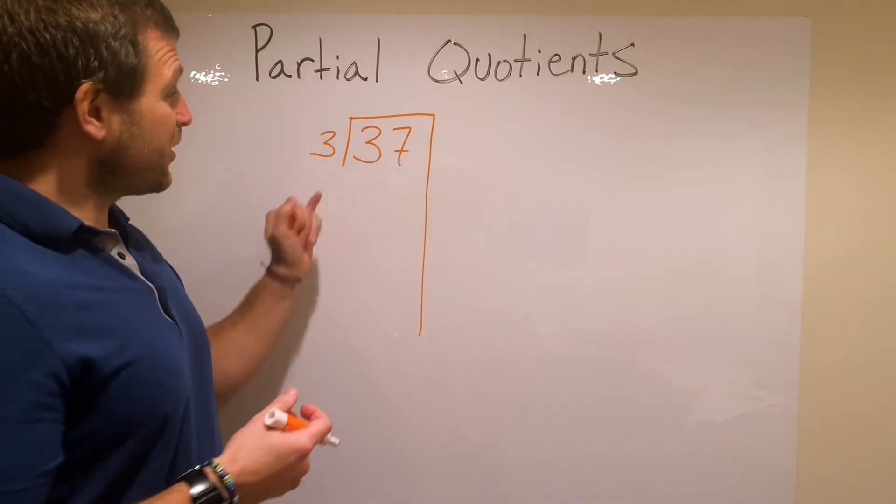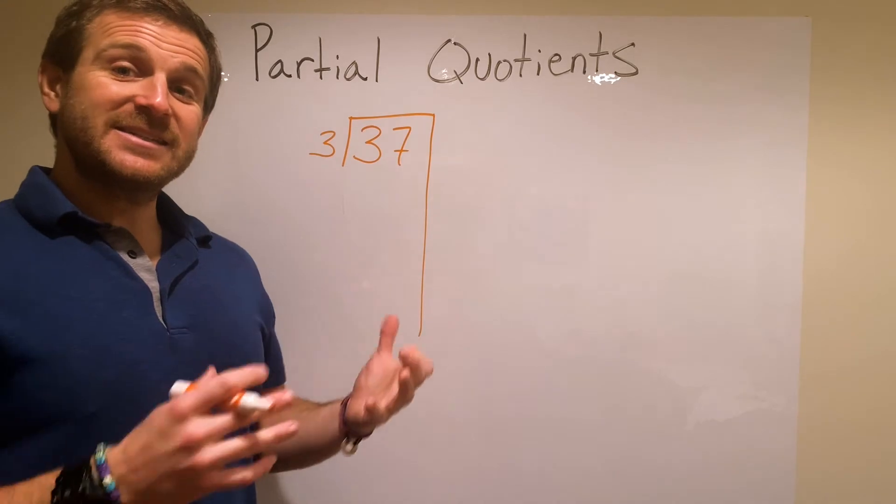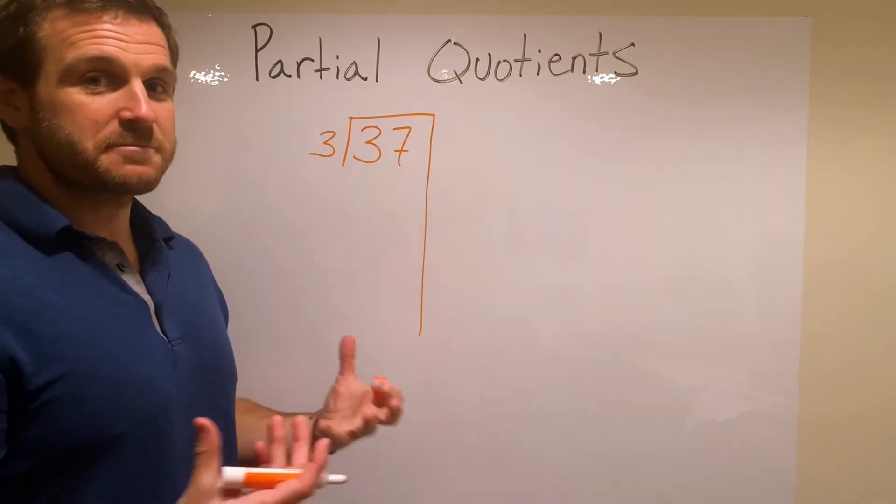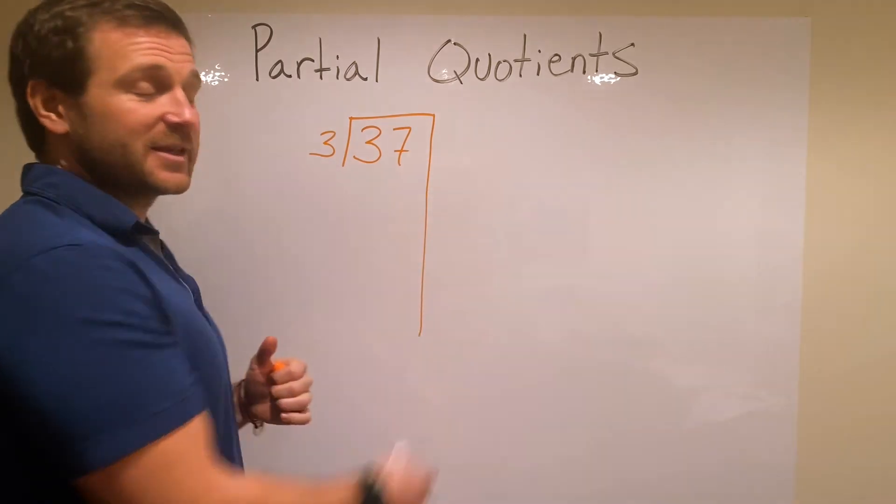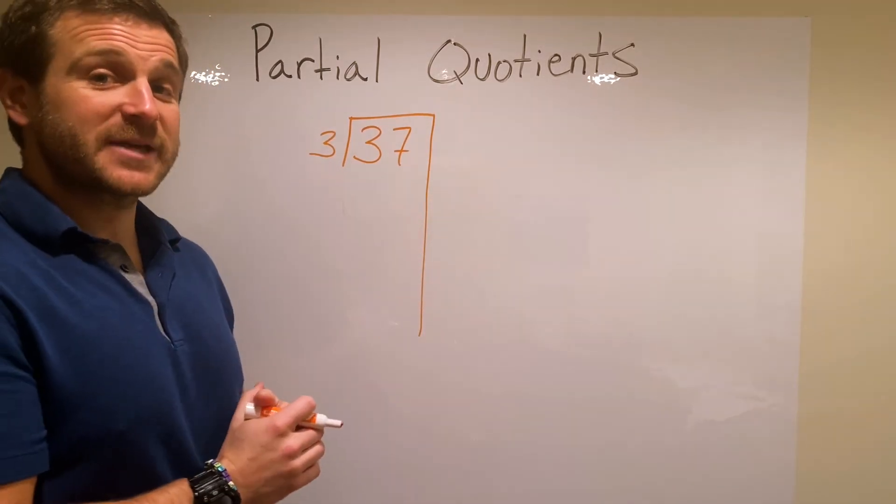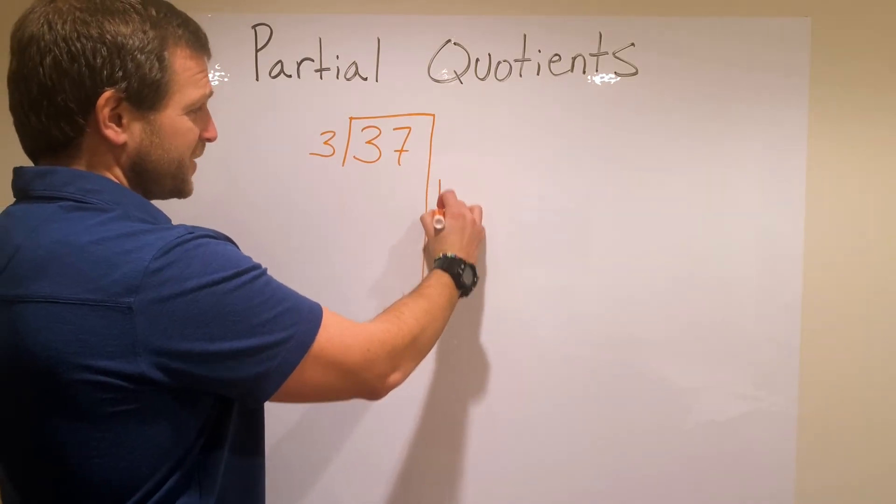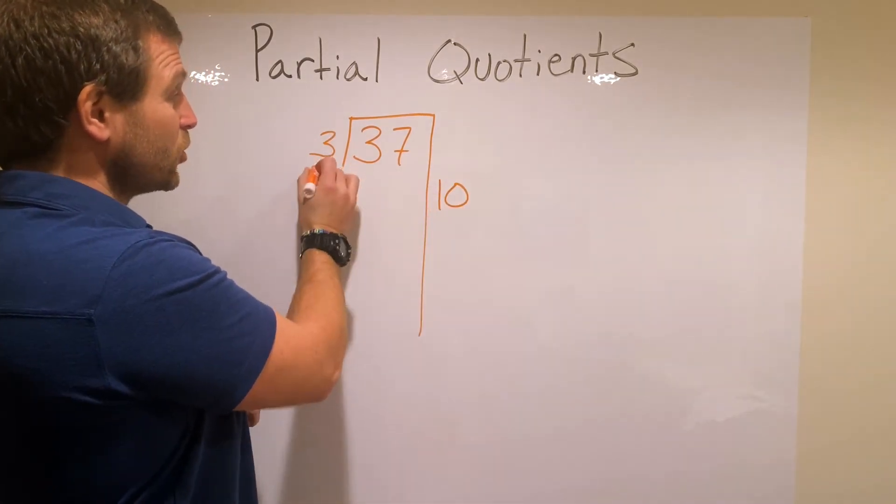But I know that 3 can go into 37 ten times. So I want to get a nice big number. I want to try and get the biggest numbers possible, and that will limit the number of steps I have to do in order to solve it. So let's do a group of 10 first. 10 groups of 3.